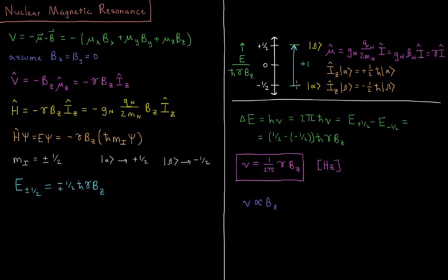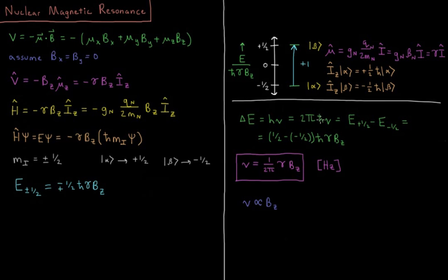The energy of transitioning from the lower energy state to the higher energy state: just as in all spectroscopy, we start at one state, absorb a photon, and go to another state. The energy of the photon absorbed is the difference in energy between the two states. So ΔE = h·ν = 2π·ħ·ν, which equals the energy of the plus one half (beta) state minus the energy of the minus one half (alpha) state. That equals one half minus negative one half, times ħ·γ·Bz.